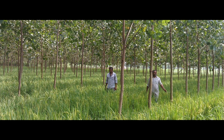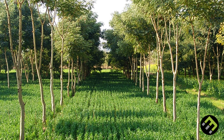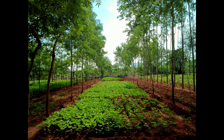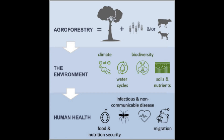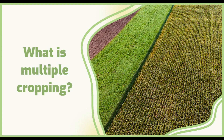Agroforestry refers to any of a broad range of land use practices where crops are integrated with trees and shrubs. This intentional combination of agriculture and forestry has multiple benefits: enhanced yields from staple food crops, enhanced farmer livelihoods from income generation, increased biodiversity, improved soil structure and health, reduced erosion, and carbon sequestration.